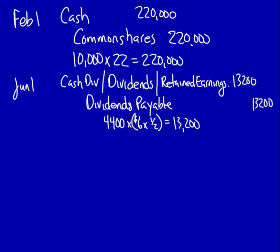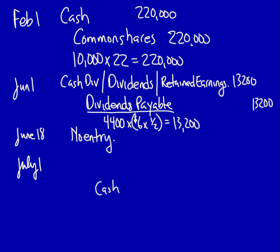June 18th is the date of record — on the date of record, there's no entry. Instead, all the names of the shareholders are written down, and these are the individuals who will be paid the dividend regardless of whether they own the shares on the date of payment. On July 1st, we pay the dividend: we give up cash and debit dividends payable since we previously recorded that liability. Same amount, $13,200. Neither of these entries affects the accounts I'm tracking in my T-accounts.